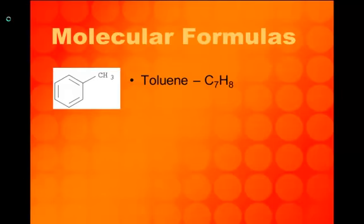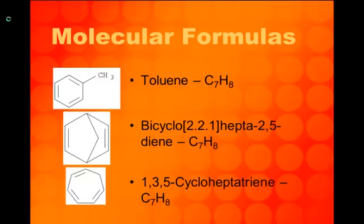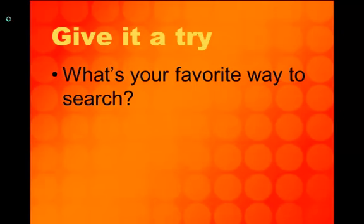Molecular formulas can be the most difficult way to search for compounds, because a single molecular formula can refer to several different chemicals. For example, toluene has the molecular formula C7H8 — but so do a lot of other chemicals. You may need to use more than one resource and more than one search method to find compound information. Try a few of these search strategies and see what you like best. This is the end of Part 4.